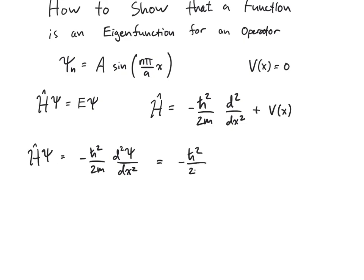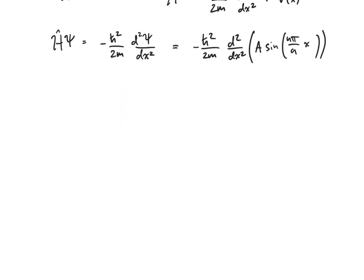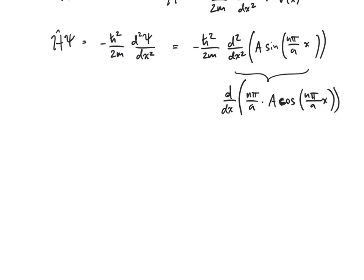Negative h-bar squared over 2m, second derivative with respect to x. I'm going to put my function right in there: A times sine of n pi over a times x. Let's get the first derivative of that function. The first derivative becomes d/dx of n pi over a times A cosine of n pi over a times x, using the chain rule. And then when I perform one more derivative, I get negative n pi over a squared times A sine of n pi over a times x.